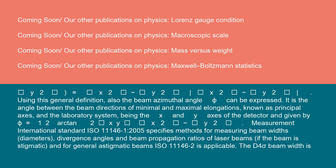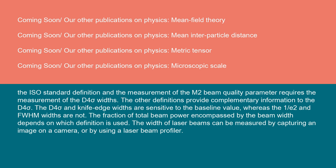Measurement: International Standard ISO 11146-1:2005 specifies methods for measuring beam widths, diameters, divergence angles, and beam propagation ratios of laser beams. If the beam is stigmatic, and for general astigmatic beams, ISO 11146-2 is applicable. The D4 sigma beam width is the ISO standard definition and the measurement of the M² beam quality parameter requires the measurement of the D4 sigma widths.